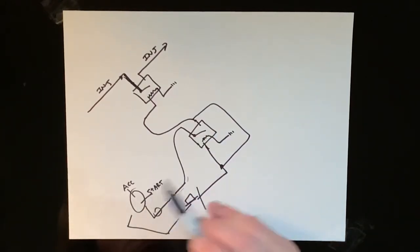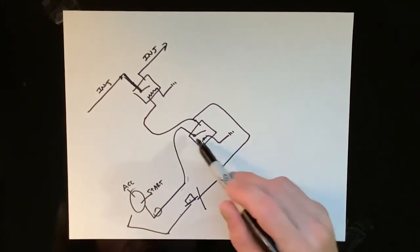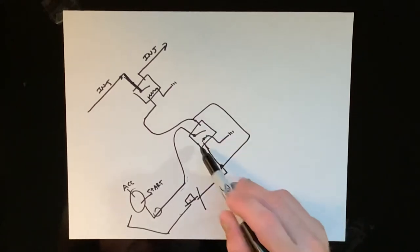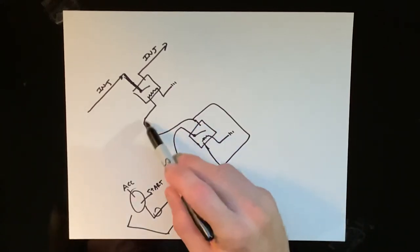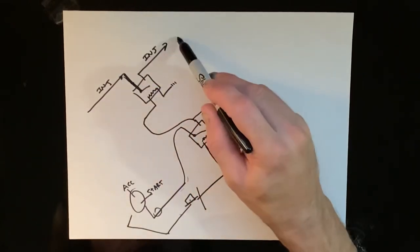So you put it in the ACC position. This line has power. This line has power. You push the button, it latches. This self-feeds itself, continues to latch, providing power to the relay for the injectors, and that completes the injector circuit.